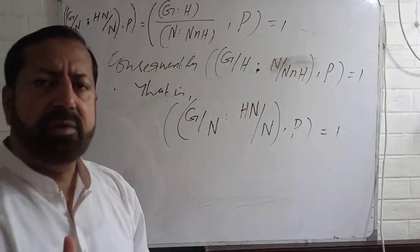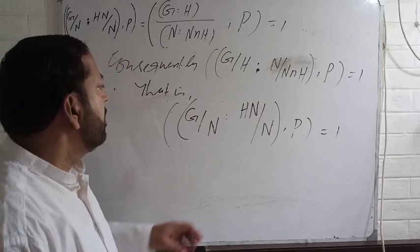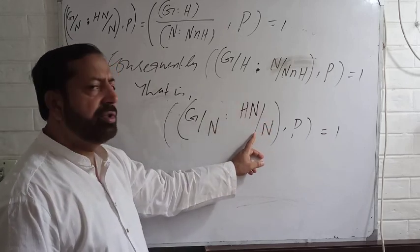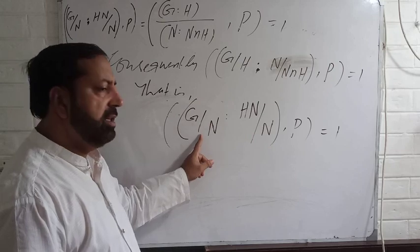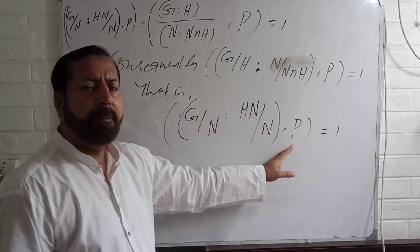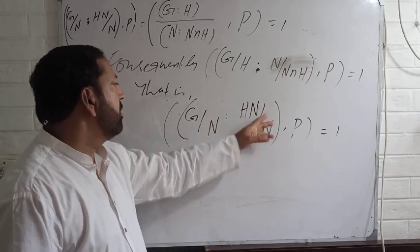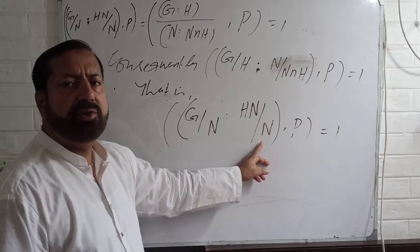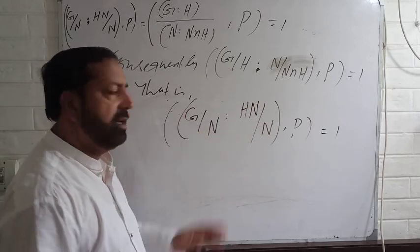So what was the alternative definition? This was the definition that if the index of this in G by N is prime to P, then this is a Sylow P subgroup in G by N. Hence,